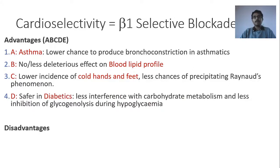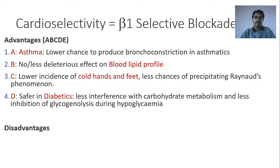D is for diabetics. Cardioselective beta-blockers are safer in diabetics because non-selective beta-blockers interfere with carbohydrate metabolism. In the liver, beta-2 receptor activation causes gluconeogenesis and glycogenolysis, altering blood glucose levels. Cardioselective beta-blockers do not interfere with these activities, so they are safer in diabetic patients — less interference with carbohydrate metabolism and less inhibition of glycogenolysis during hypoglycemia.